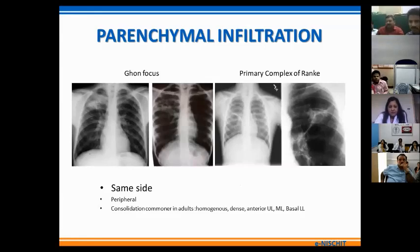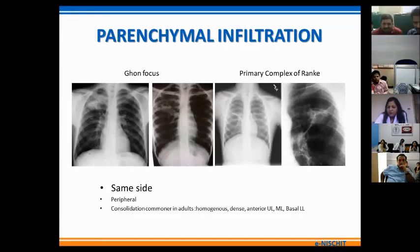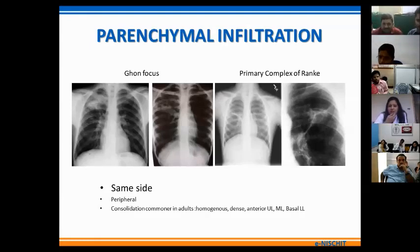The primary parenchymal focus of infection in the chest is known as the Ghon focus. It is on the same side as the nodal enlargement and is located in a peripheral subpleural location. The combination of the parenchymal Ghon focus, the lymph node, and the draining lymphatic is known as the primary complex of Ranke or the Ranke complex. In adults with primary TB, there is more consolidation and parenchymal involvement and less nodal involvement.